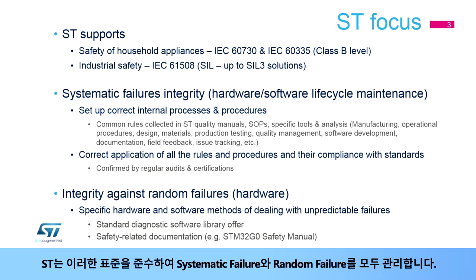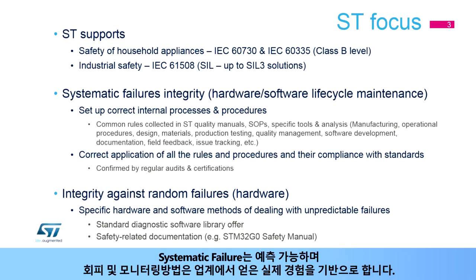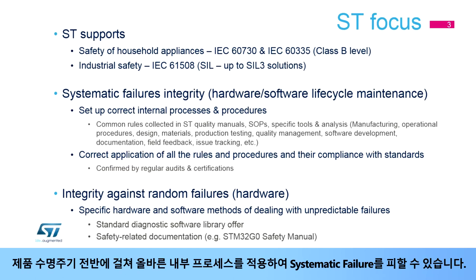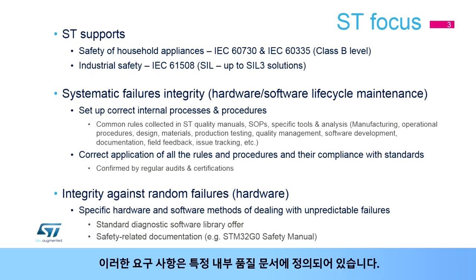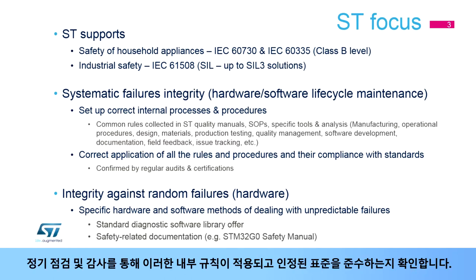ST, in compliance with these standards, cares about both systematic and random failures. Systematic failures are predictable, and their avoidance and monitoring are based on practical experience gained in the industry. Systematic failures can be avoided mainly by applying correct internal processes throughout a product's lifecycle, as defined in specific internal quality documentation. Regular inspections and audits ensure that these internal rules are applied and comply with the recognized standards.